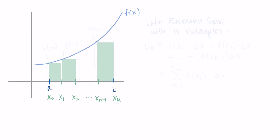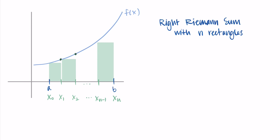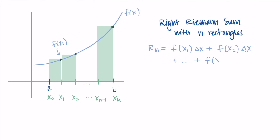For the right Riemann sum, we keep the same points but use the right side of each rectangle as the height. So x_1 becomes the endpoint of the first rectangle, f(x_1) is its height, and we repeat for all rectangles. Writing it out: f(x_1)·Δx + f(x_2)·Δx + ... + f(x_n)·Δx. As a sum: from i = 1 to n of f(x_i)·Δx. What makes this different from the left Riemann sum is that we start at i = 1 and go up to i = n.